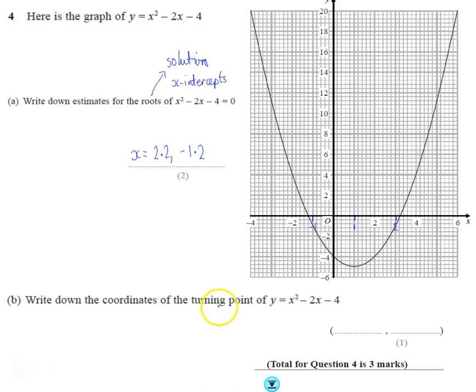Now write down the coordinates of the turning point. So the turning point is the lowest point, which in our case is right here. It's going to be 1 for the x, and then we're coming down and it seems to line up exactly between minus 1 and minus 5, so minus 5 on the y.